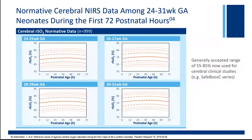Another very important study from the Petra Lemmers group in the Netherlands looked at normative data among almost 1,000 babies — 999 babies — for cerebral oxygenation in infants between 24 and 31 weeks gestational age during the first 72 postnatal hours. Integrating all this data, there is now a generally accepted range of 55 to 85 percent used for cerebral values in clinical studies in this population during the first week of life. These are the normative values being used in the SafeBoost series of trials, which examines the use of near-infrared spectroscopy in the first couple days of life in that population.